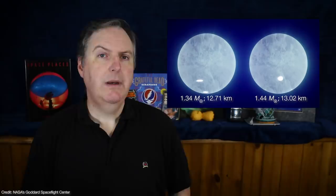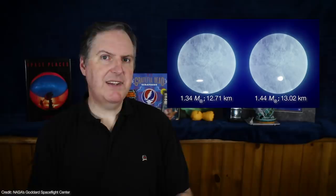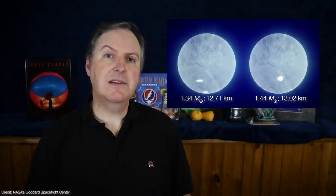One team, based in the United States, estimated the pulsar at 1.34 solar masses and 12.71 kilometers in radius. A second team, based in the Netherlands, got a similar result of 1.44 solar masses and a radius of 13.02 kilometers.